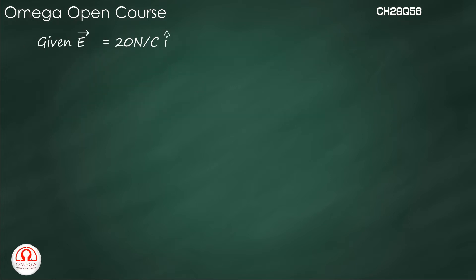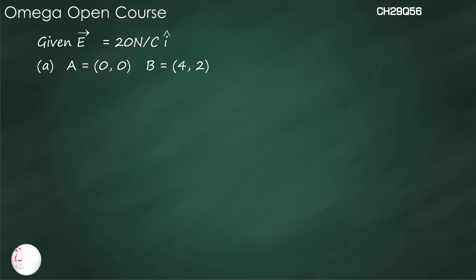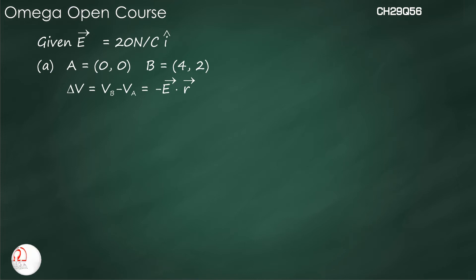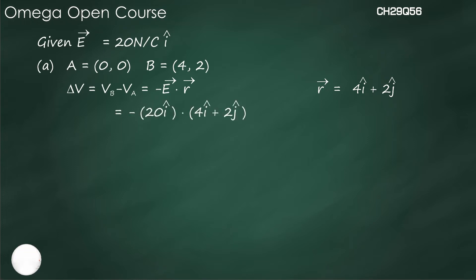Part a: A = (0, 0), B = (4m, 2m). We know that delta V, which equals VB minus VA, is equal to minus E dot r, where r = 4 i-cap + 2 j-cap. So delta V = minus 20 i-cap dot (4 i-cap + 2 j-cap) = minus 80 volts. This is our answer for part a.